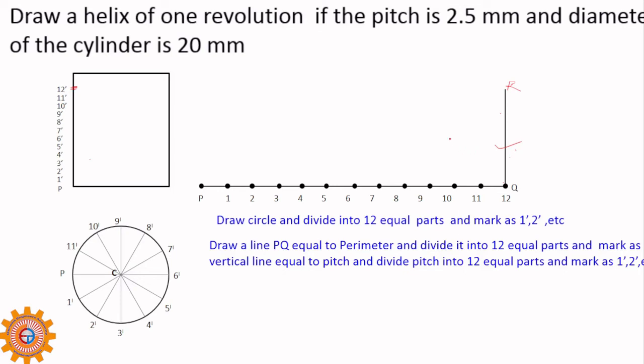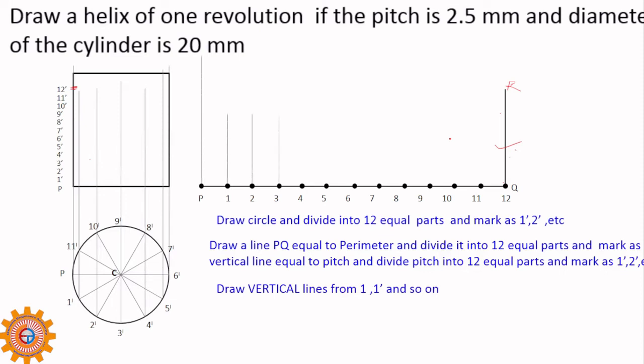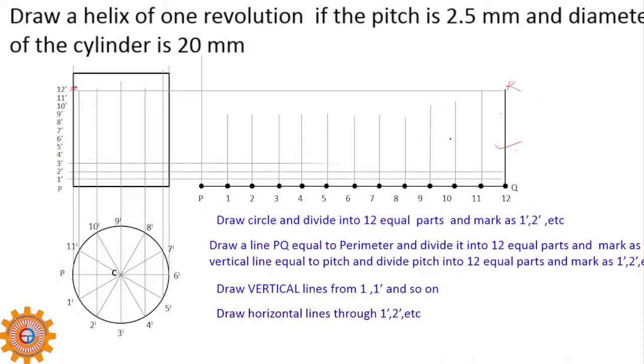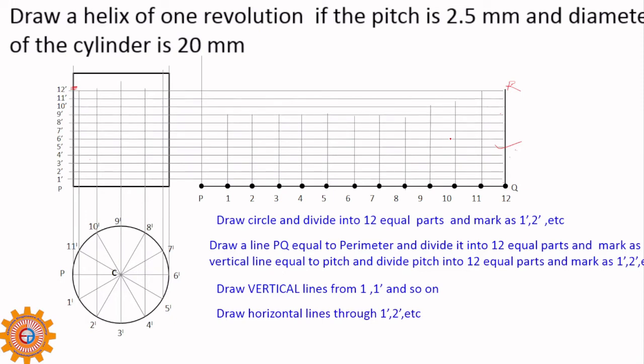You can draw vertical lines from 1, 2, 3, 4, like that, to 1 dash, 2 dash, 3 dash, like that. That P is taken on the cylinder. These vertical lines are that is, been drawn. Now, horizontal lines to 1 dash, 2 dash, 3 dash, 4 dash, 5 dash, 6 dash and so on, till 12 dash is reached.